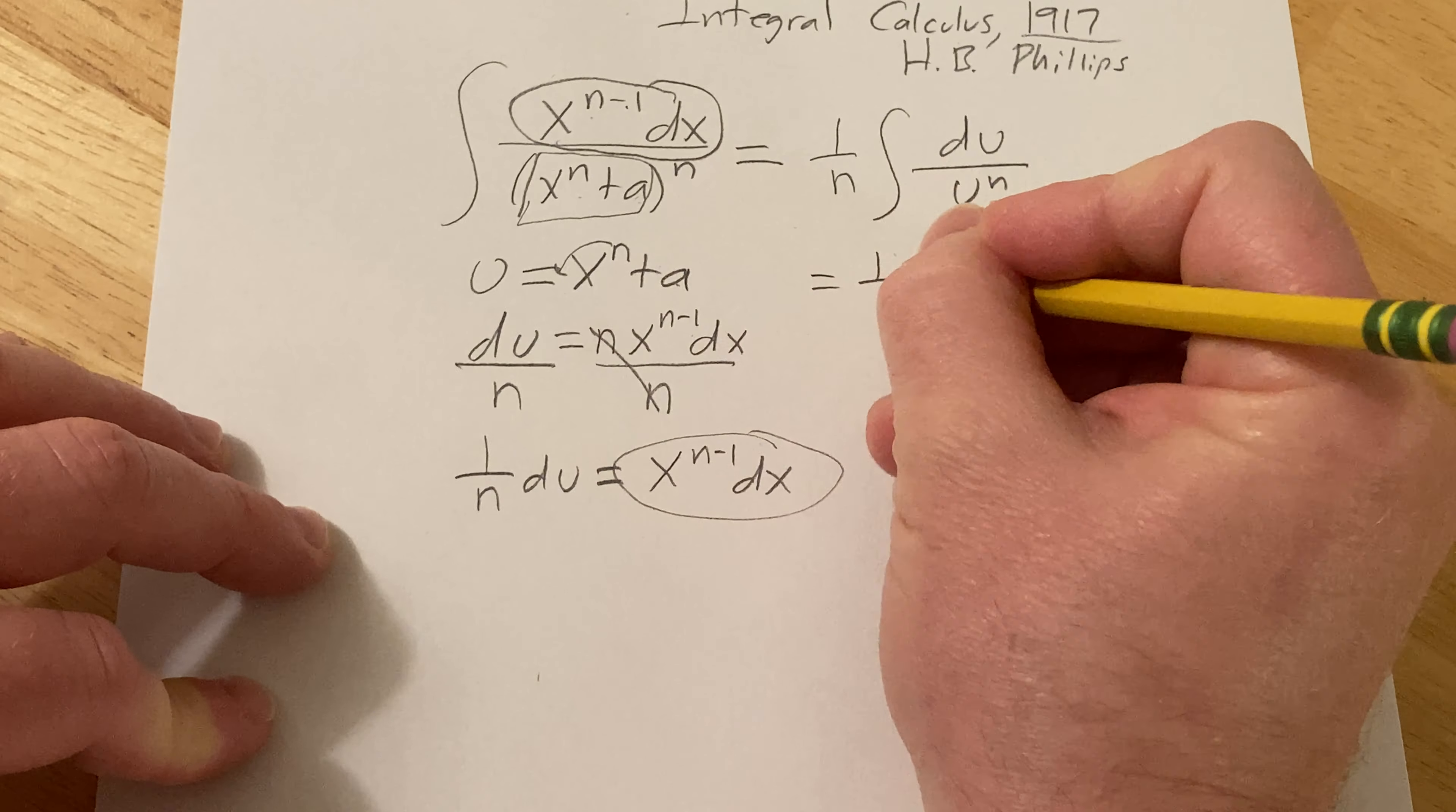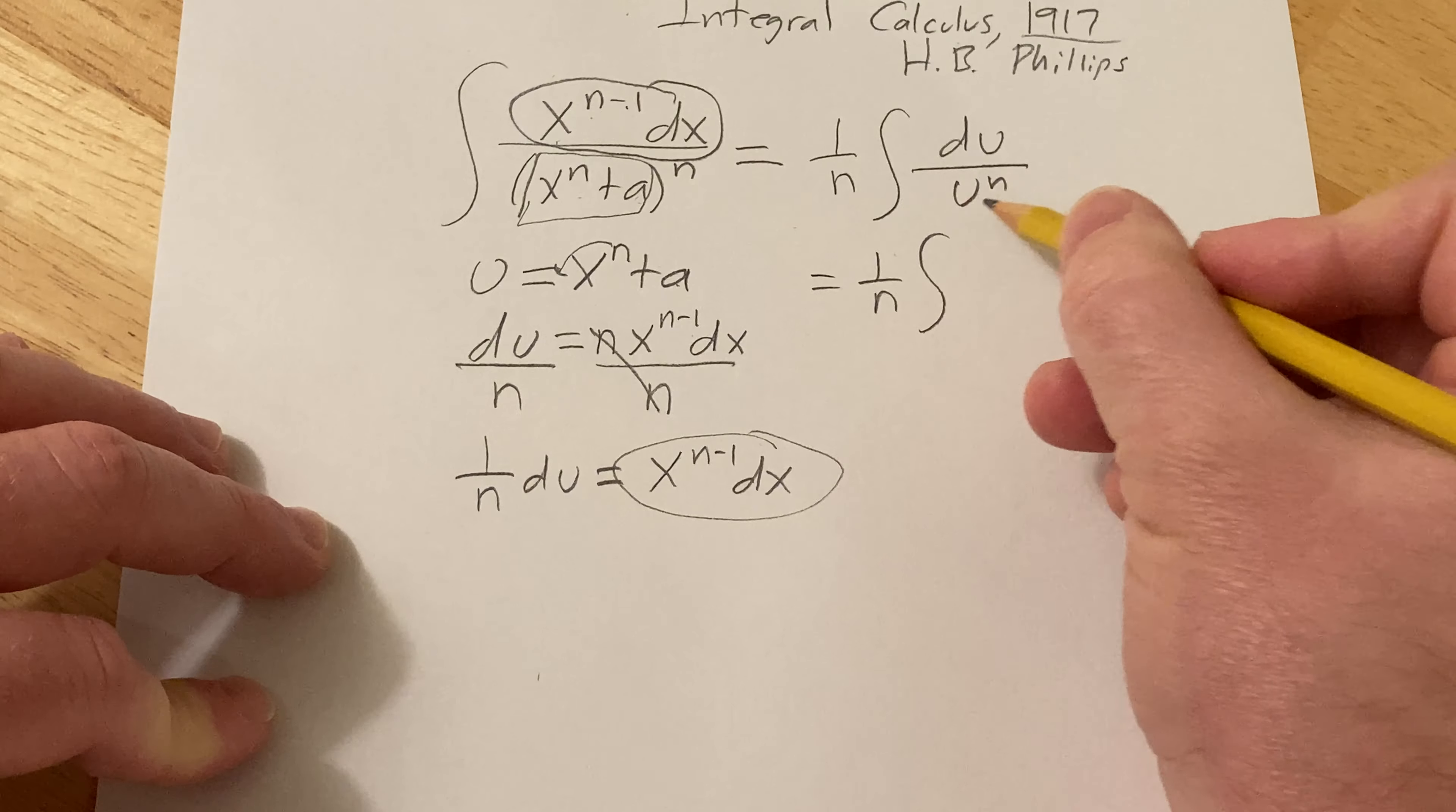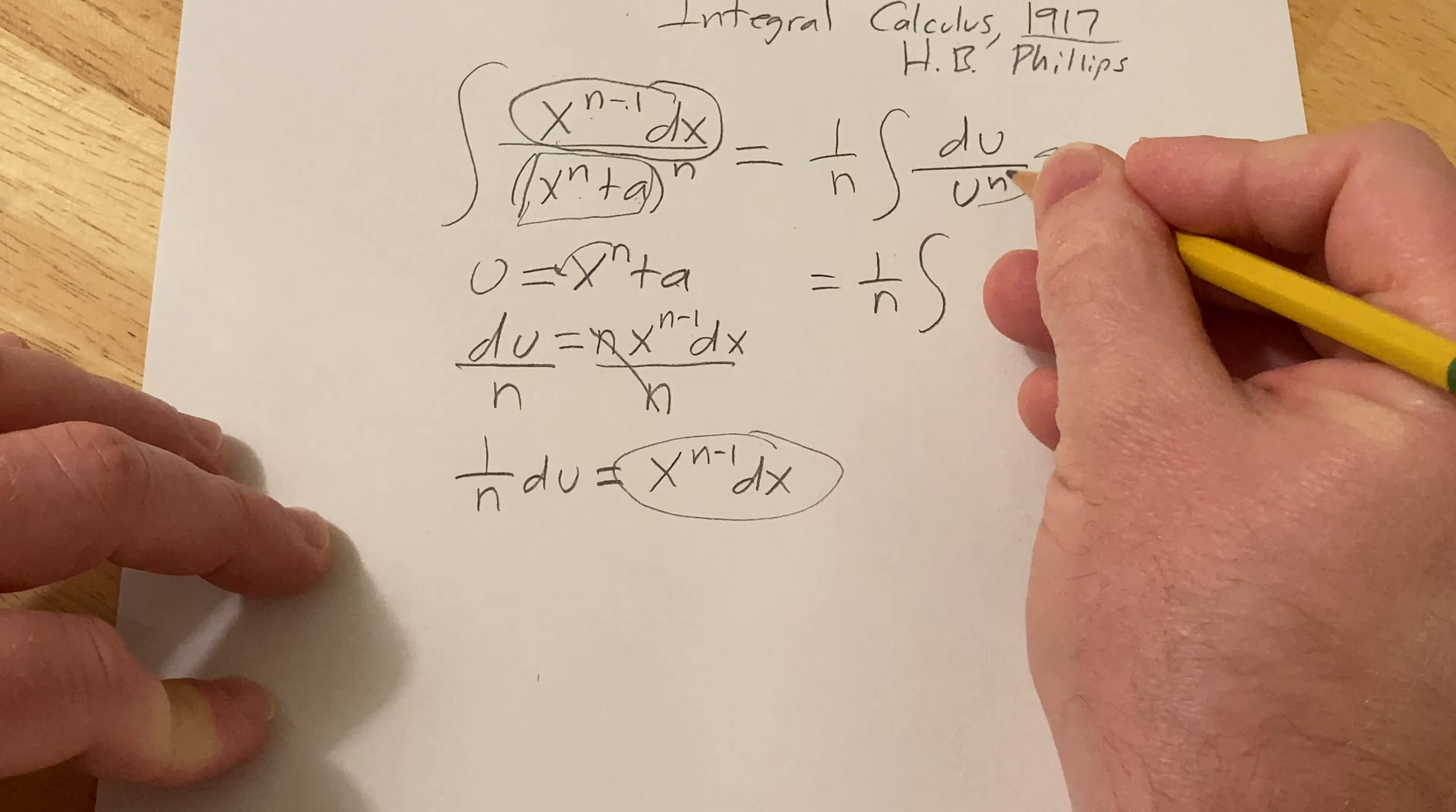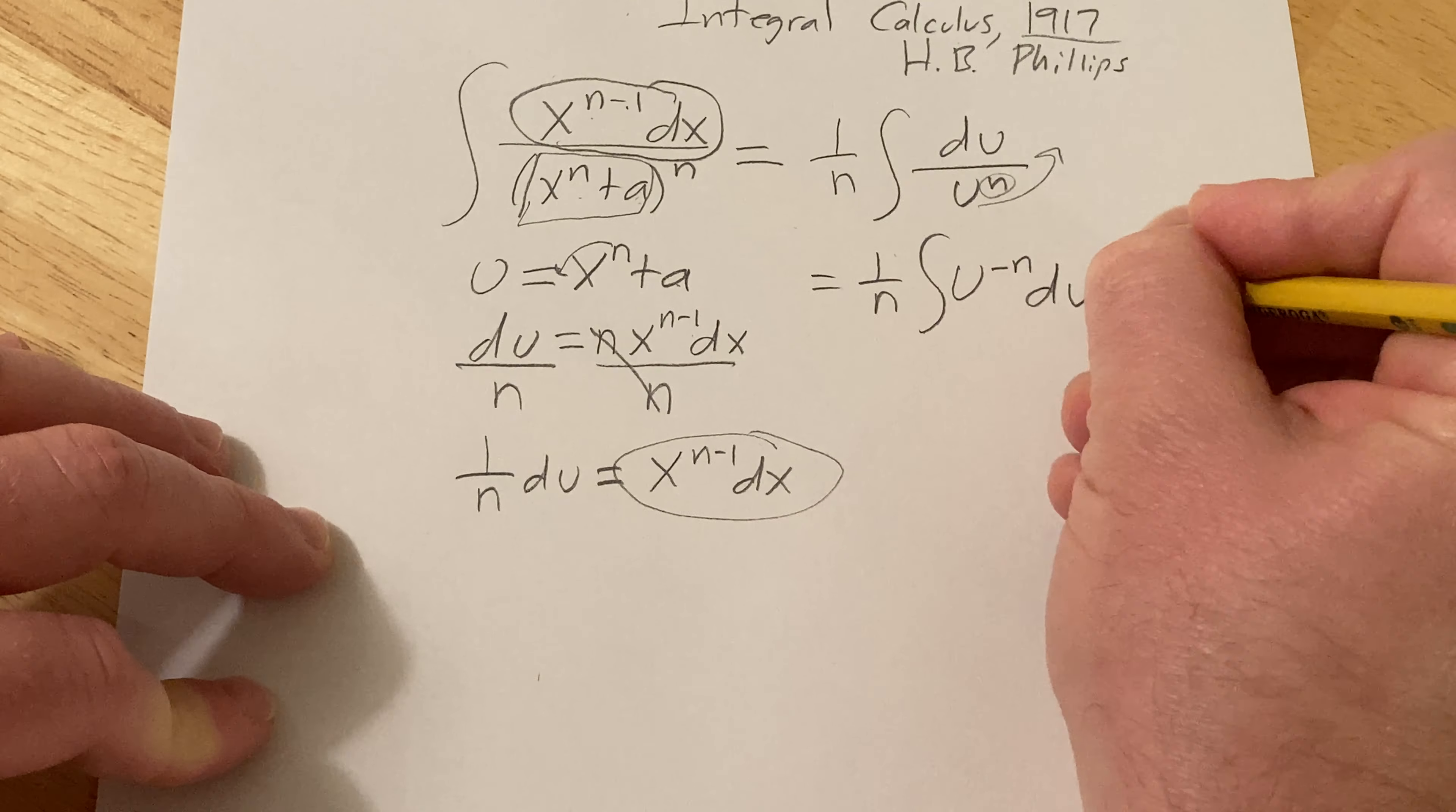So this will be 1 over n. We want to write this as u to a power so we can bring it upstairs and it'll become a negative exponent. This is u to the negative n du.